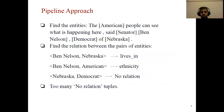One approach to solve this problem is the pipeline approach, which has two steps. First, find the entities in the sentence — here American, Senator, Ben Nelson, Nebraska, Democrat are the entities. Then among all pairs of entities, find the relations, like between Ben Nelson and Nebraska there is a 'live in' relation.